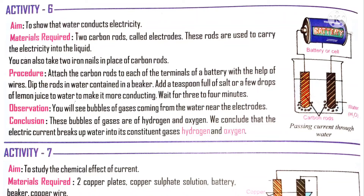What is an electrolyte? The solution must contain ions. We discussed in the previous session that many solutions produce ions — like salt solution, acidic solution, or alkaline/basic solution — they produce ions in water. By adding salt to water or lemon juice to water, this solution acts as an electrolyte because lemon juice contains citric acid, so it produces ions. Salt also produces positive and negative ions.